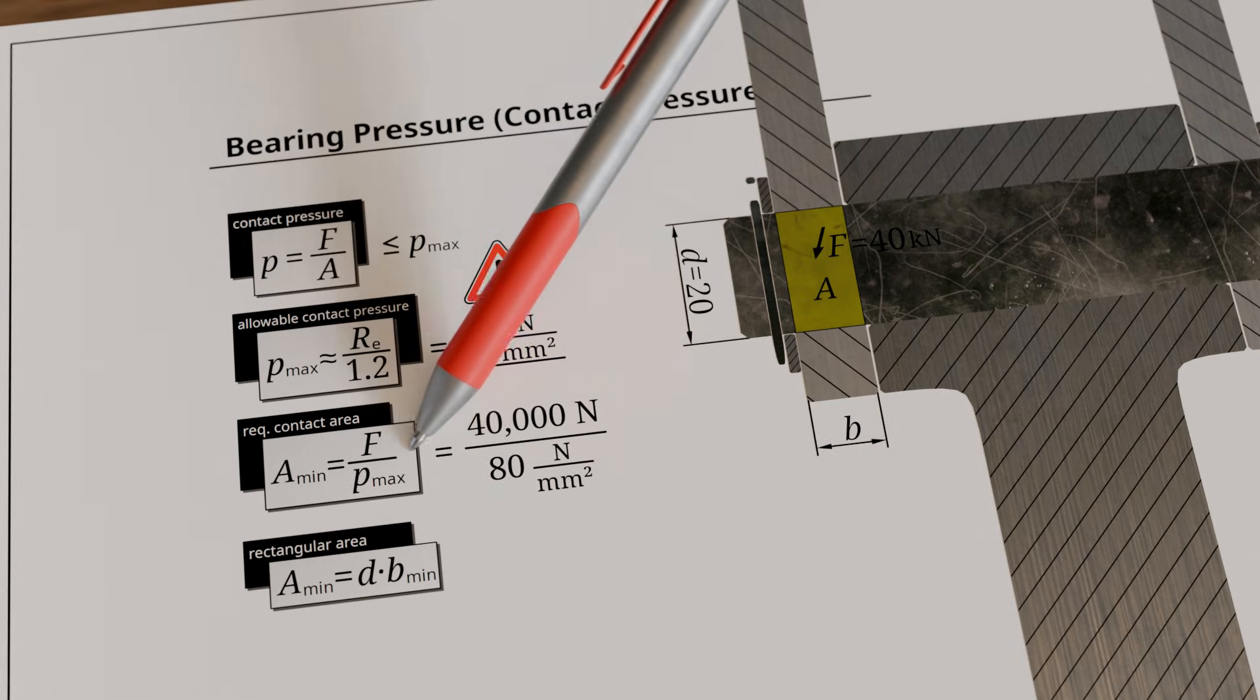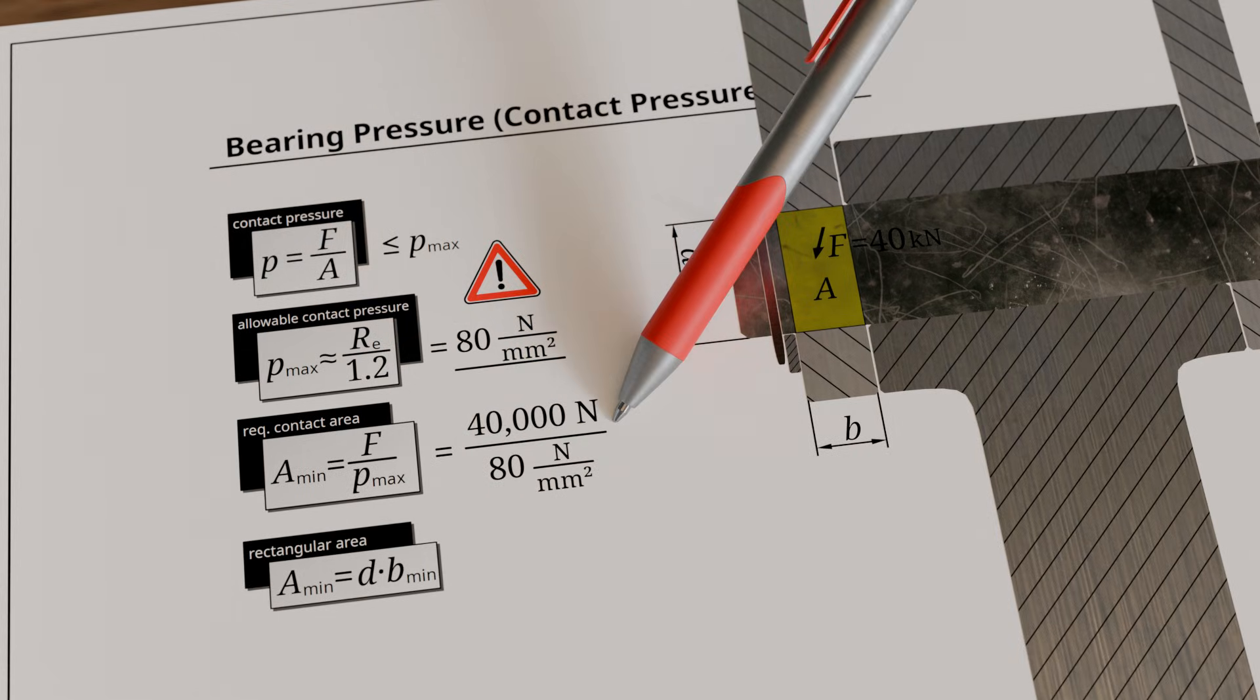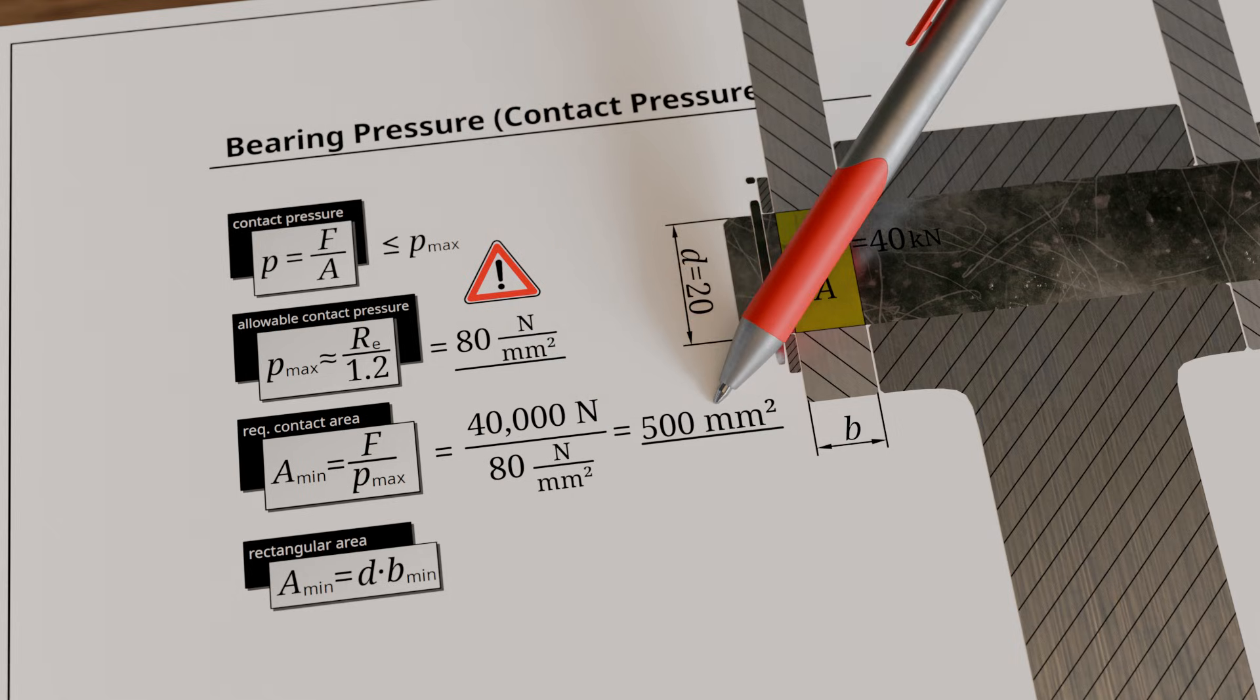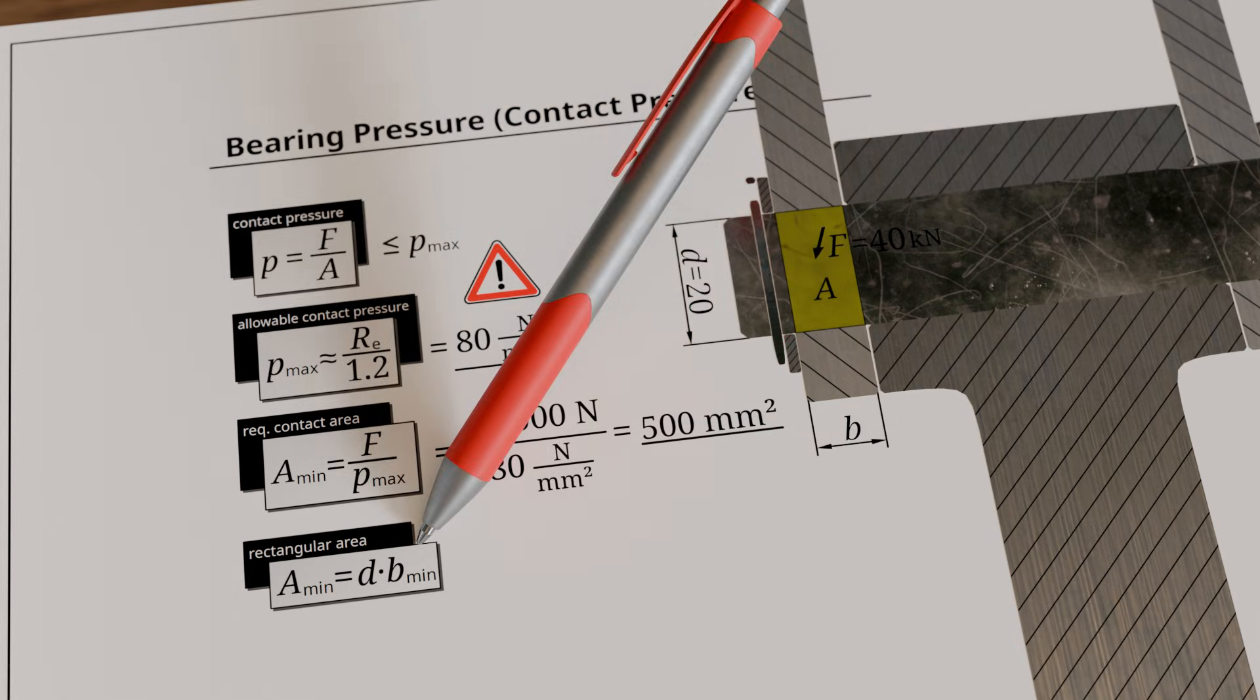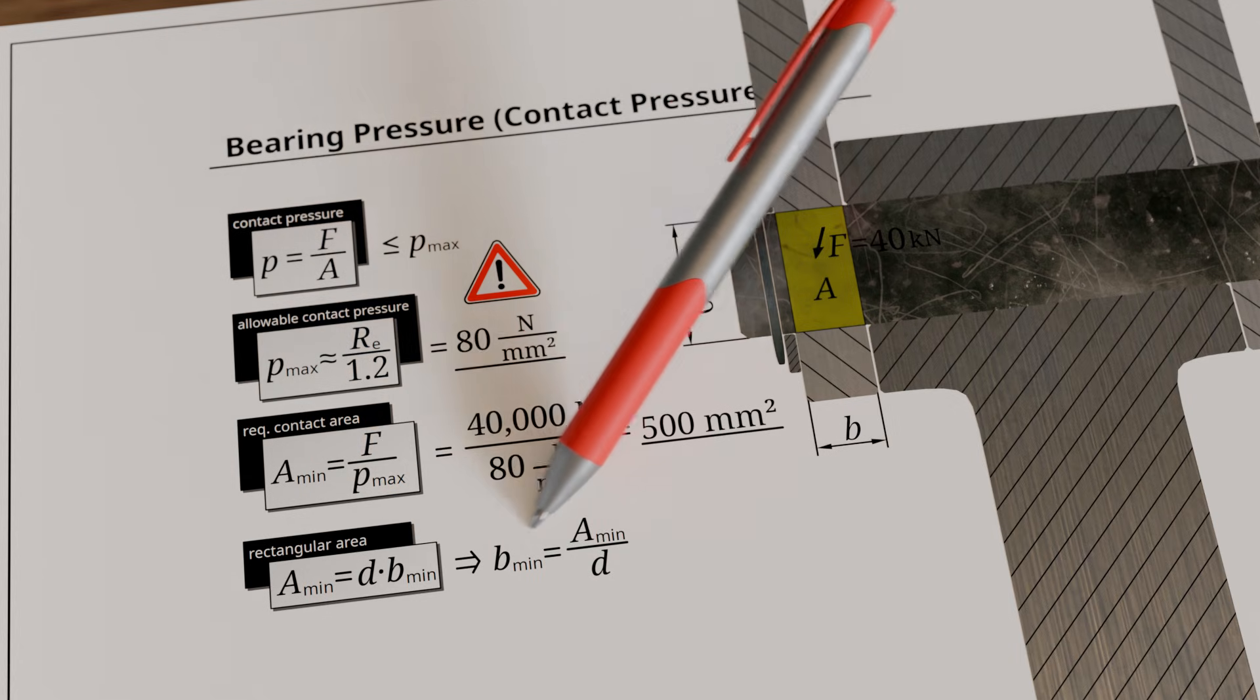Now, using the acting force of 40,000 newtons and the allowable bearing pressure of 80 newtons per square millimeter, we determine the minimum required contact area, which in this case amounts to 500 square millimeters.